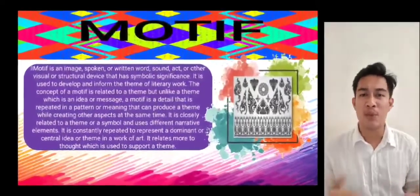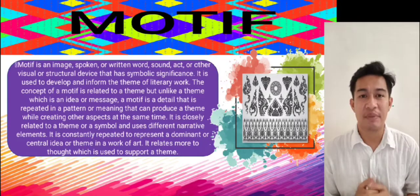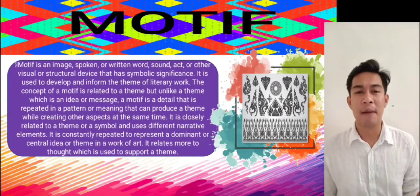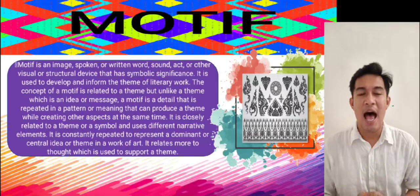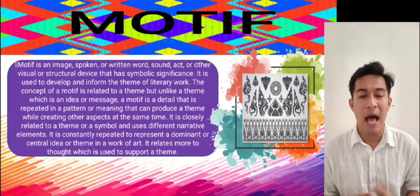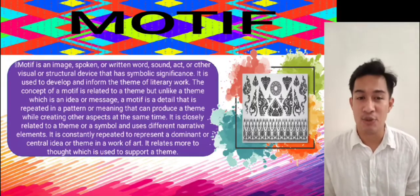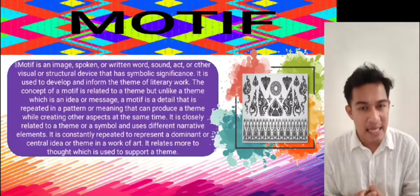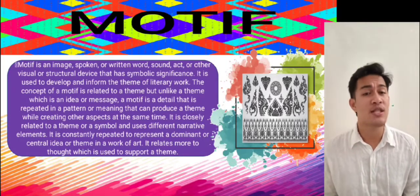A motif is an image, spoken or written word, sound, act, or other visual or structural device that has symbolic significance. It is used to develop and inform the theme of literary works. The concept of motif is related to a theme, but unlike a theme which is an idea or message, a motif is a detail that is repeated in a pattern or meaning that can produce a theme. It is closely related to a theme or symbol, constantly repeated to represent a dominant or central idea in a work of art.